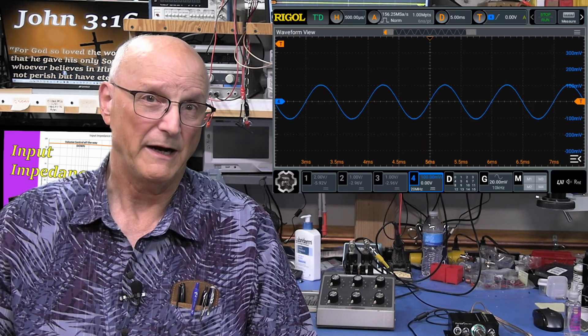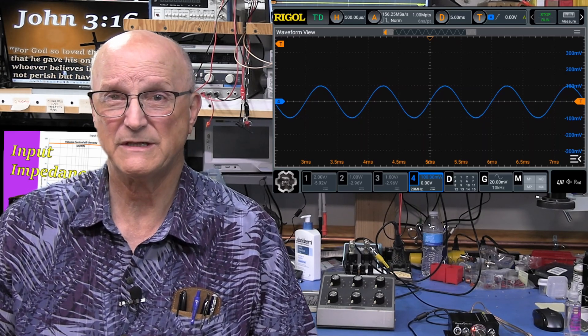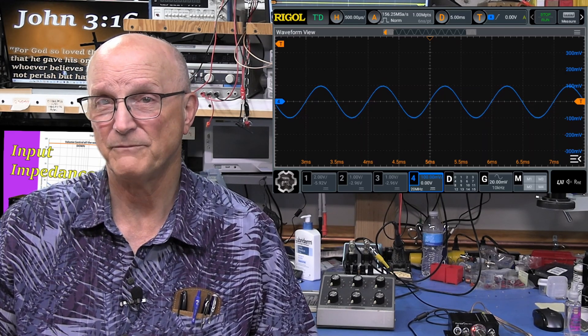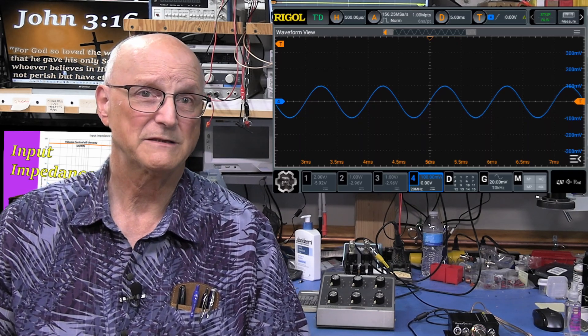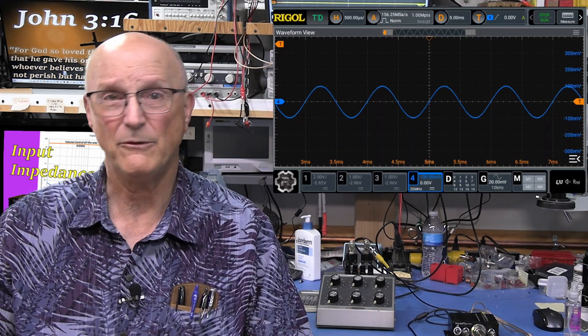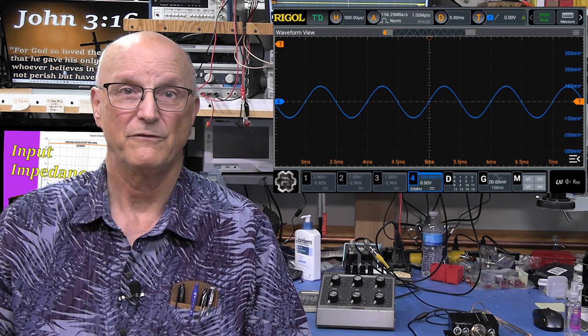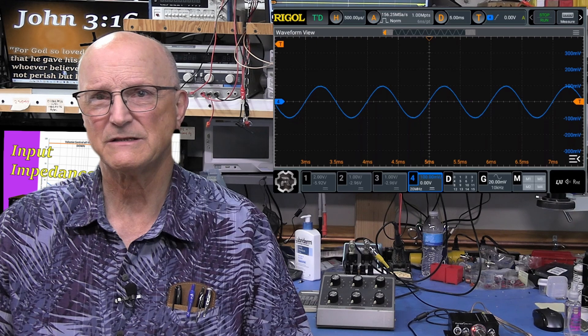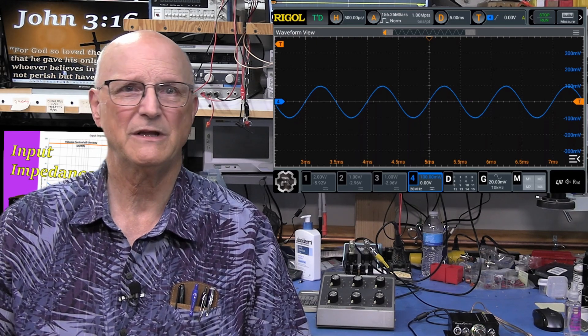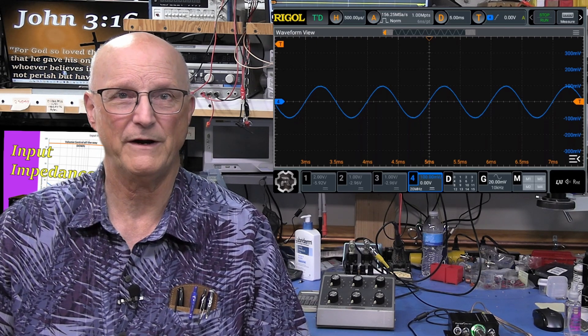The decade box forms the input resistance to a voltage divider. The input impedance of the amplifier forms the output impedance of the same voltage divider. When the voltage is halved, then the resistance of the decade box is equal to the input impedance of the amplifier.